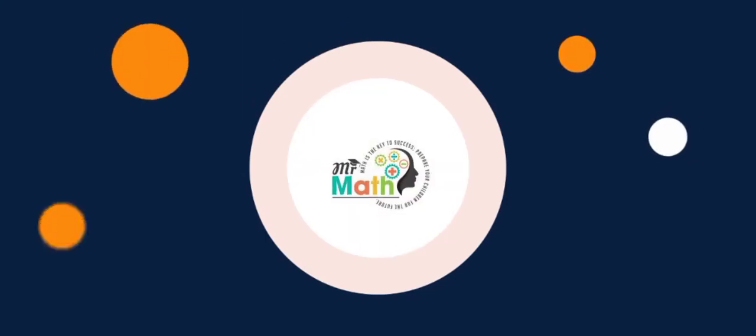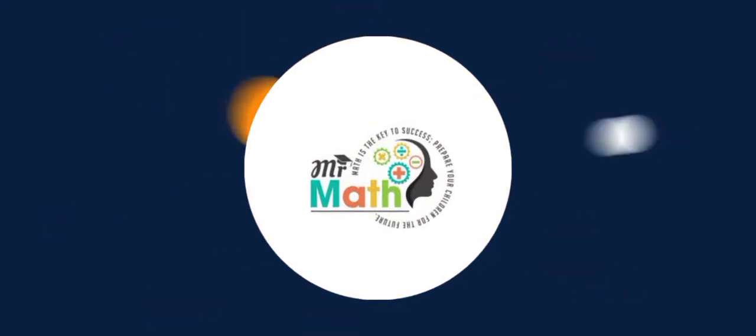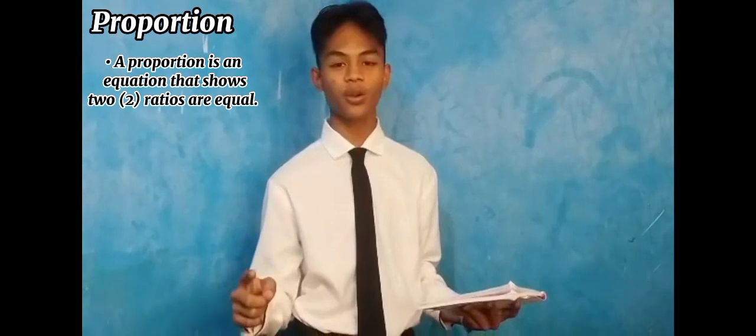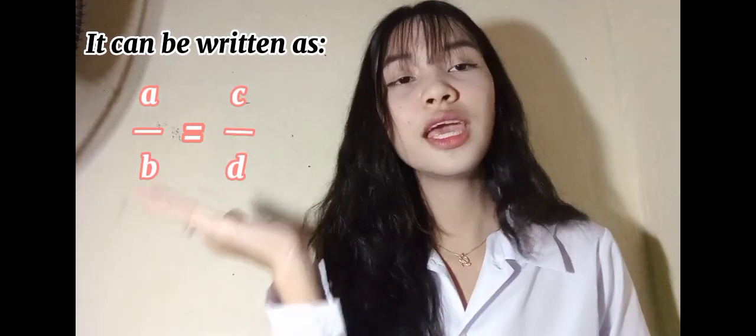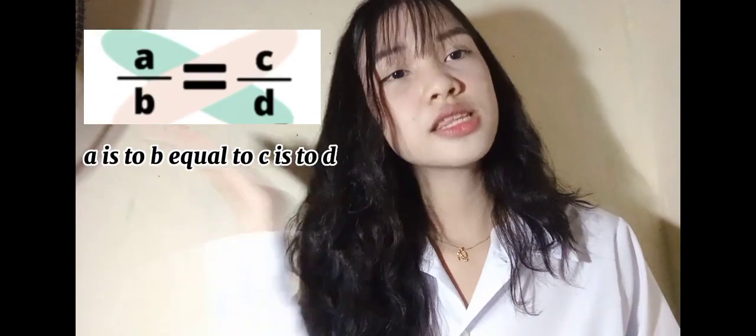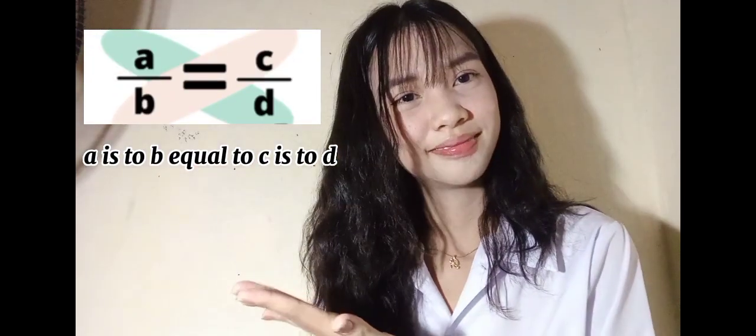Now let's talk about proportion. A proportion is an equation that shows two ratios are equal. It can be written as A is to B equal C is to D, or A over B equal C over D — it can be in colon form or fraction form. You may read this as A is to B equal C is to D. Remember, B should not be equal to 0 and D should not be equal to 0.